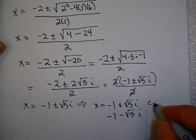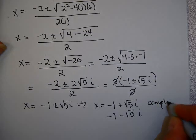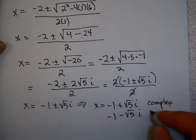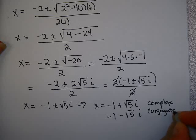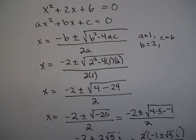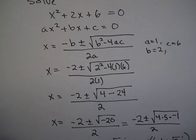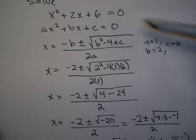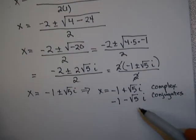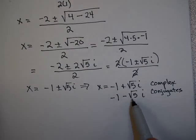Notice these two solutions are complex, and the only difference is the sign in the middle, so they are complex conjugates. Going back to the original problem, x² + 2x + 6 = 0 — now that we have complex numbers, we can say the solutions are these complex numbers.